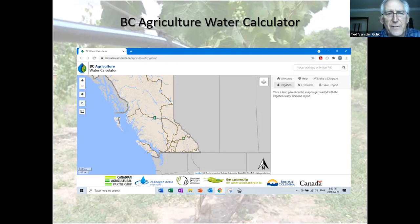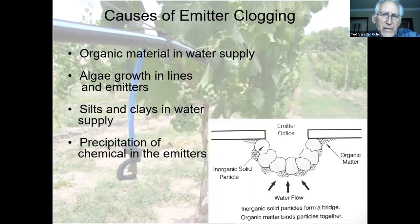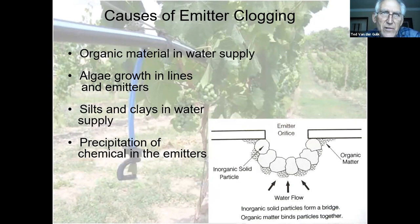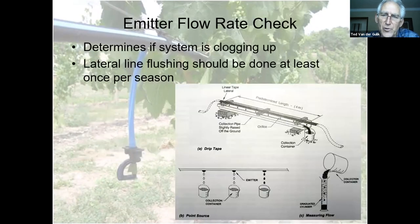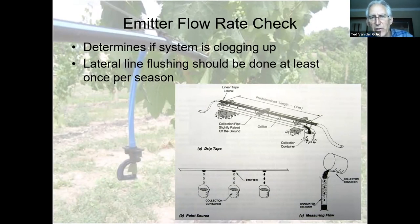When managing your drip system, it's good to know the flow rate of your emitters — if they're not throwing out the amount of water you think they are, you need to adjust or do some treatment on your drip lines to clean them out. Emitters will clog up over time. A new emitter five years later will be reduced substantially if no maintenance has been done. They can get plugged by organic material, algae growth, silts and clays, and precipitation.